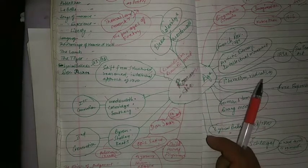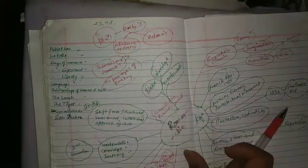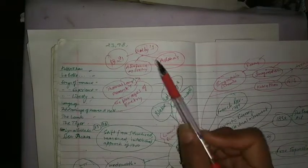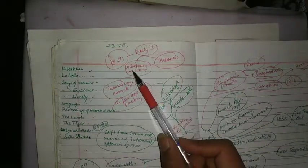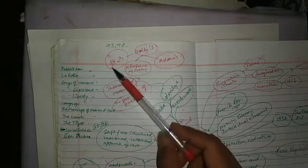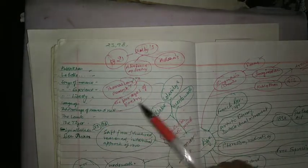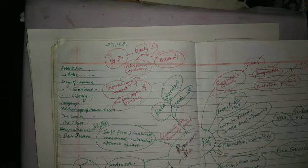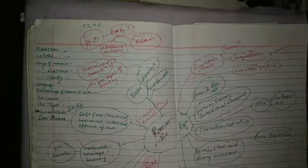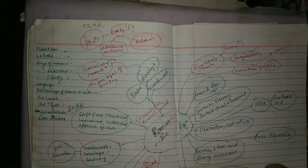Later you can add some other things like Shelley's Adonais, A Defense of Poetry, and Thomas Love Peacock's The Four Ages of Poetry. So these are the things in short, and you can study these things.